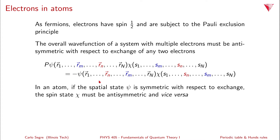In an atom, that means that if the spatial state of an electron is symmetric with respect to exchange, then the spin state must be anti-symmetric, and vice versa.